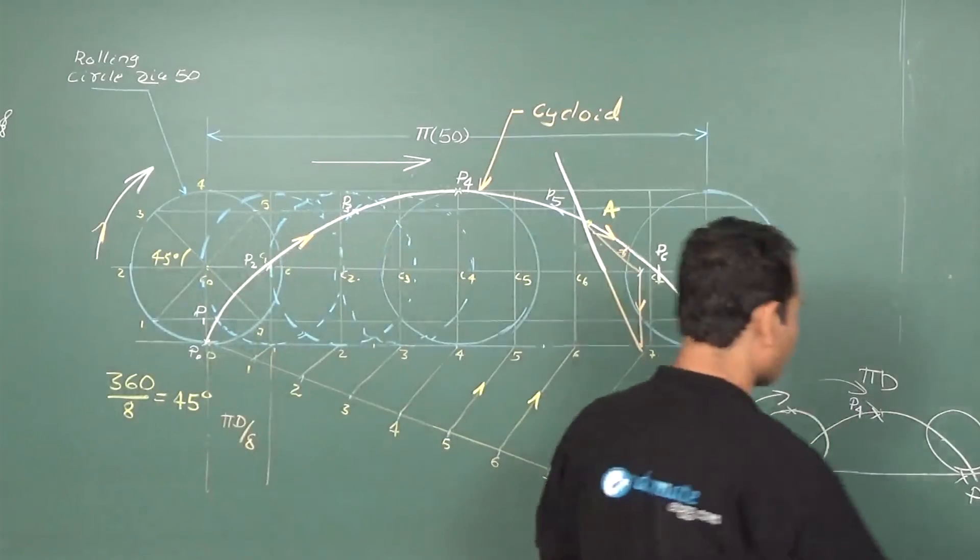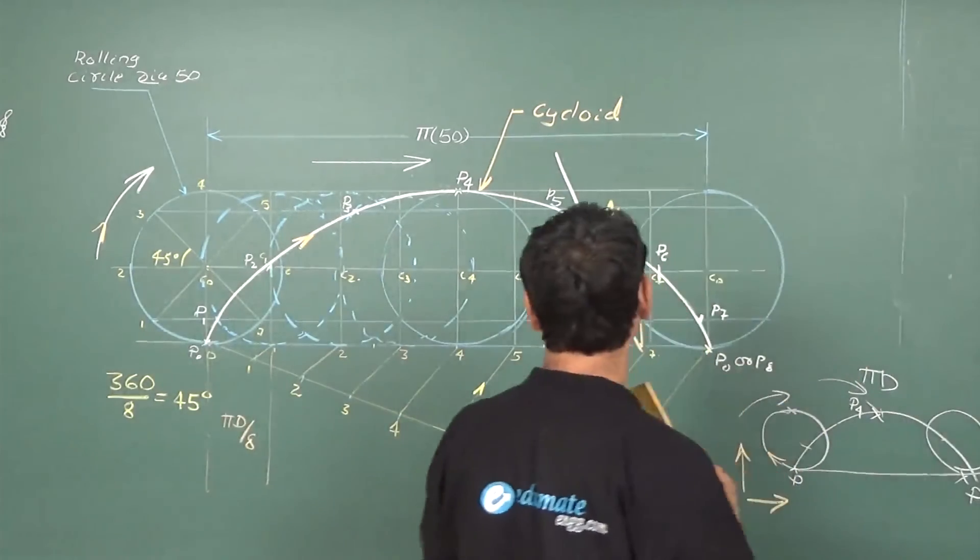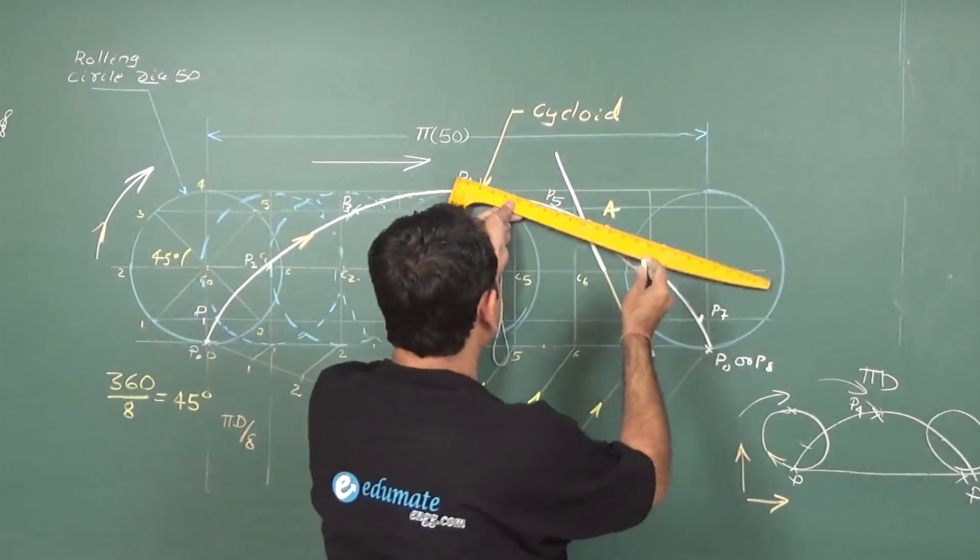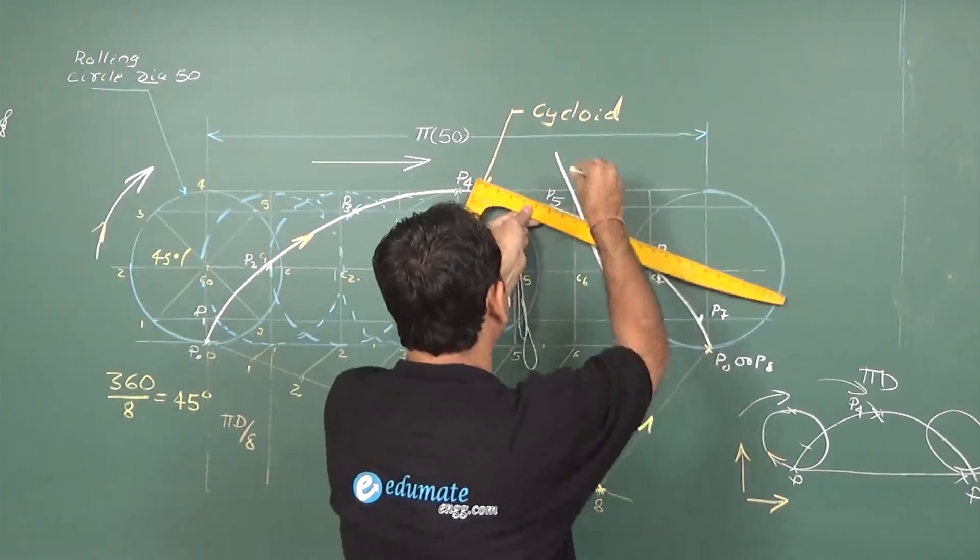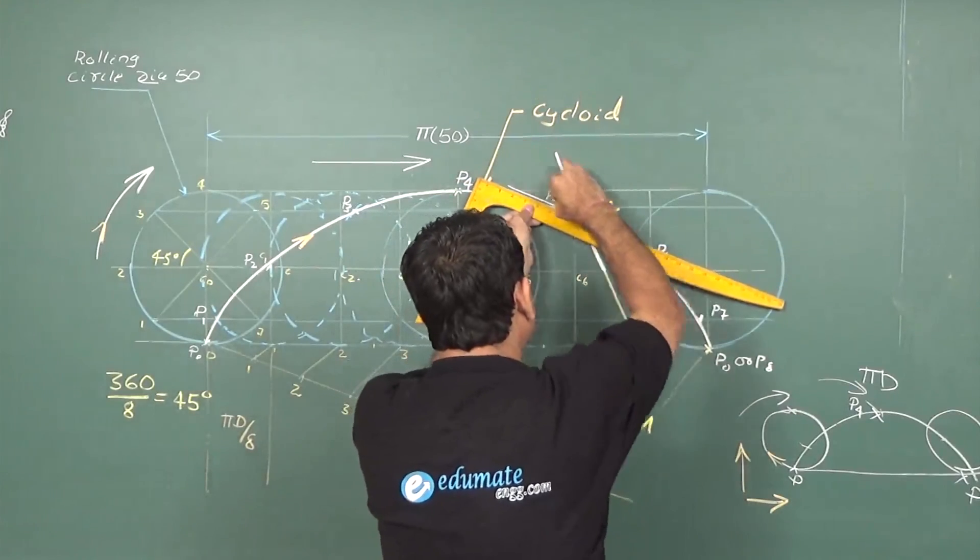And draw a line perpendicular to it. That's going to give me the tangent for the curve. That will give tangent for the curve.